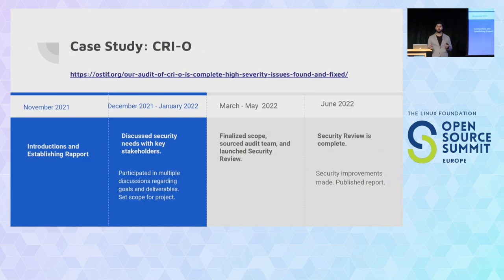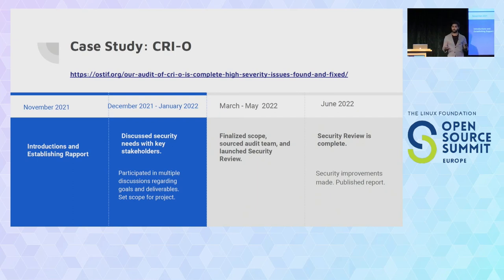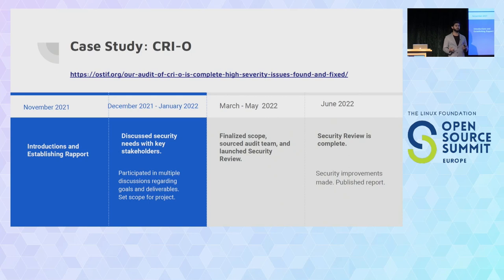Here is a quick case study to illustrate an example of our work. We did an audit of Cryo. It started with introductions, establishing rapport, meeting with the project representatives, maintainers, and contributors, and discussing the security needs with key stakeholders — really understanding what their needs are and how we can help. Then we finalized the scope, sourced an audit team, and launched the security review. About a month or two later, the security review was complete, with security improvements made and a report published.